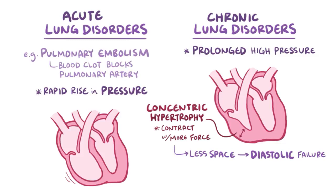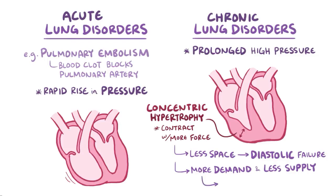The increase in right ventricular muscle mass also means that there's a greater demand for oxygen, and to make matters worse, the coronaries get squeezed down by this extra muscle, so that even less blood gets delivered to the right ventricle. More demand and reduced supply leads to right ventricular ischemia, and that leads to weaker contractions and systolic heart failure.